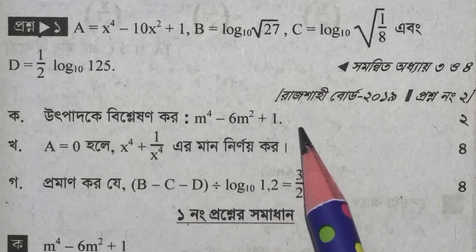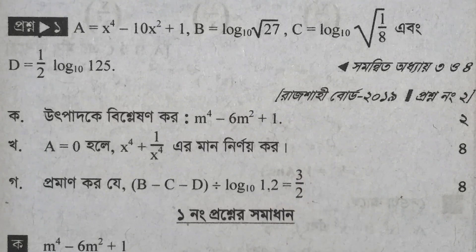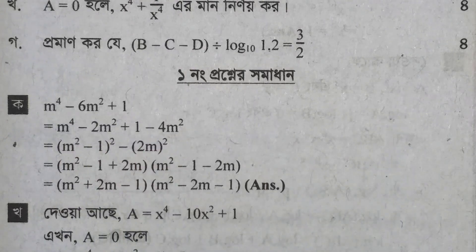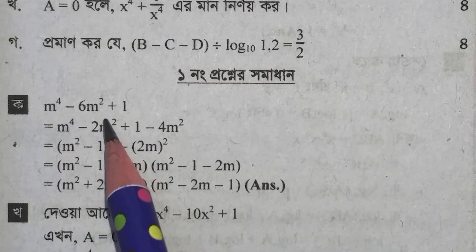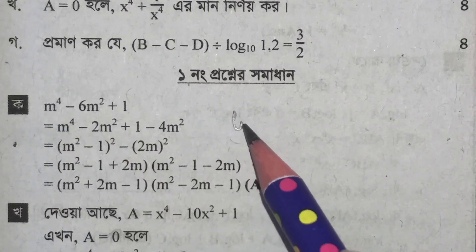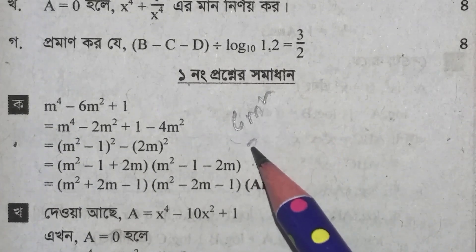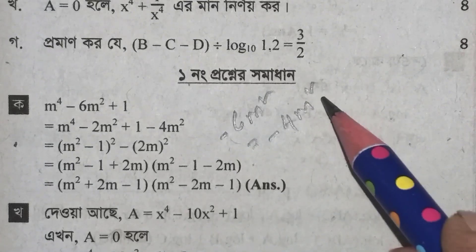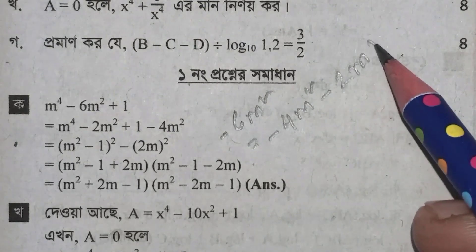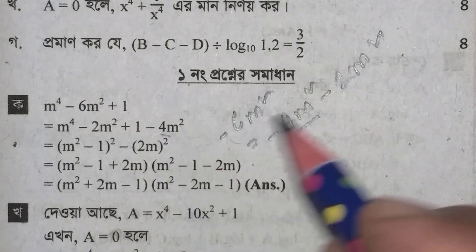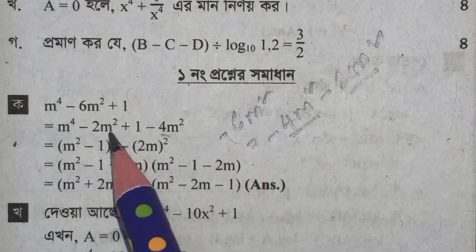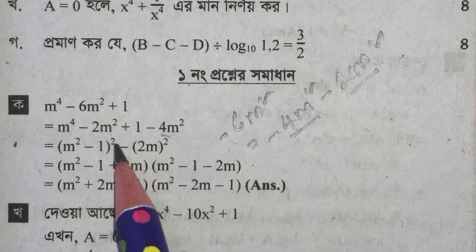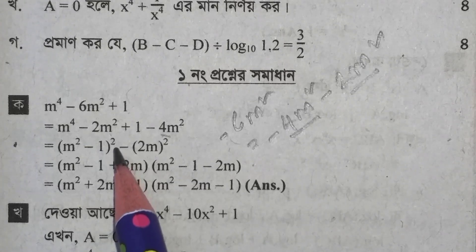Let's look at how we can do this. We have m to the power 4 minus 6m squared plus 1. We can write m squared, and then ehor 3m squared. That means we have the expression to the power 2m squared. A minus b squared is equal to a minus 2 squared.